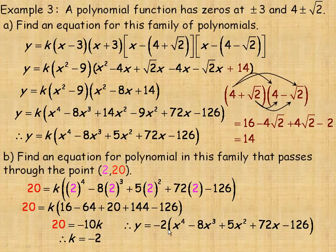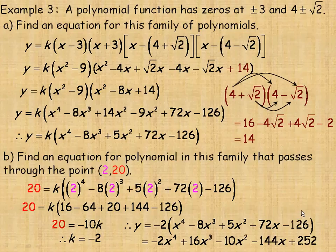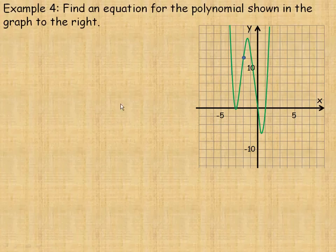In example 4, we're asked to find the equation for the polynomial shown in the graph. There is a zero at negative 3 — in fact a double zero, where the graph just touches rather than crosses. There's also a zero at 0 and at 1. So the zeros are negative 3 (double root), 0, and 1 — four roots in total, making this a quartic polynomial.